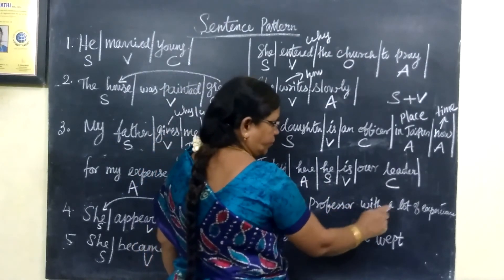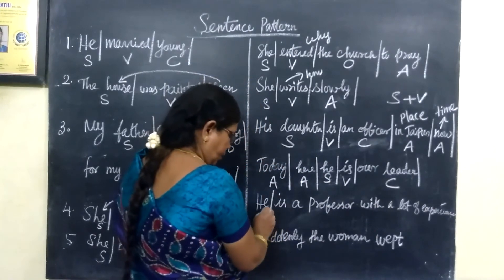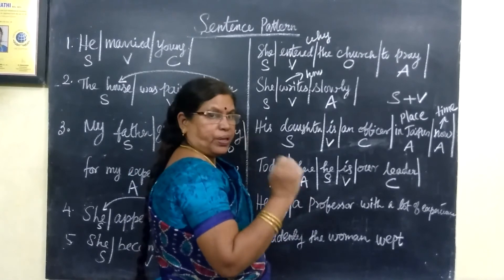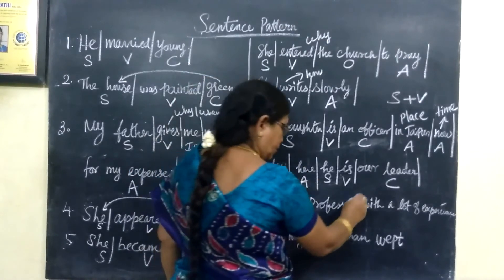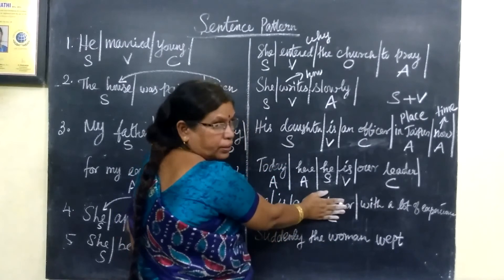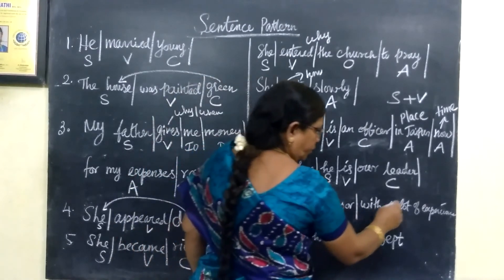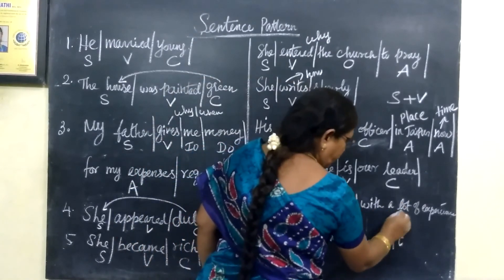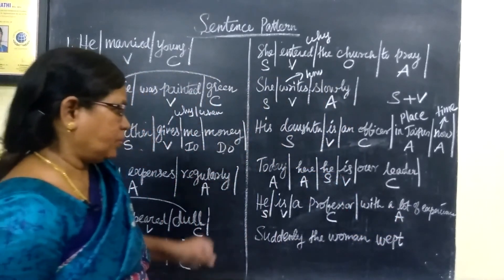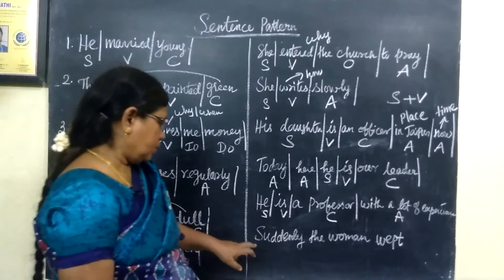Next: 'He is a professor with a lot of experience.' 'He' is the subject, 'is' is the verb, 'professor' is the complement — one hundred percent. Without the complement, the sentence is incomplete. 'With a lot of experience' — that is the adjunct. So together the sentence contains a complement and an adjunct.